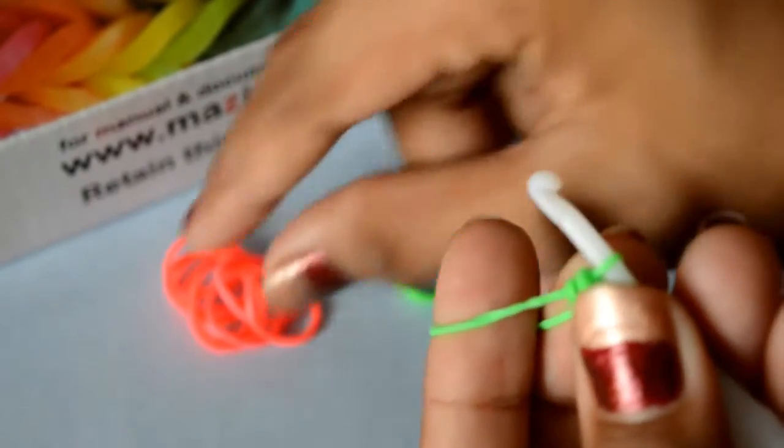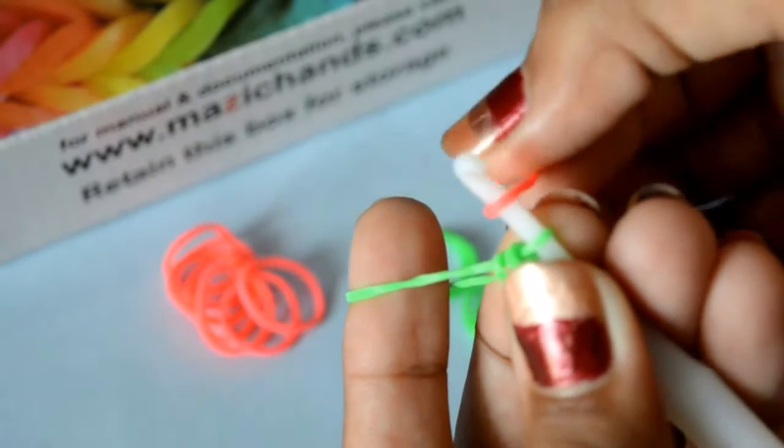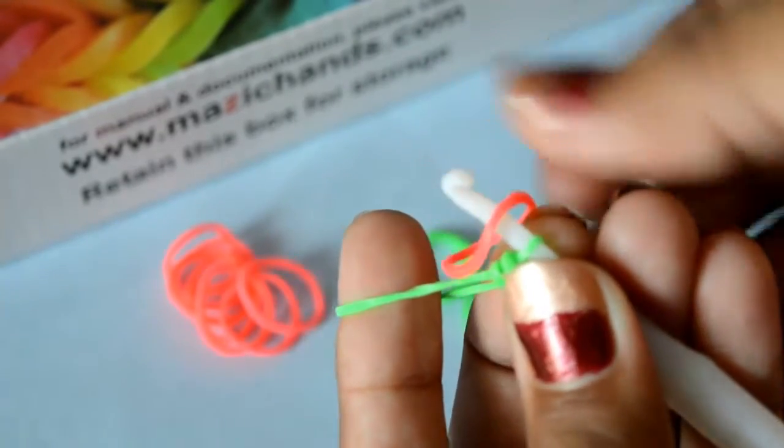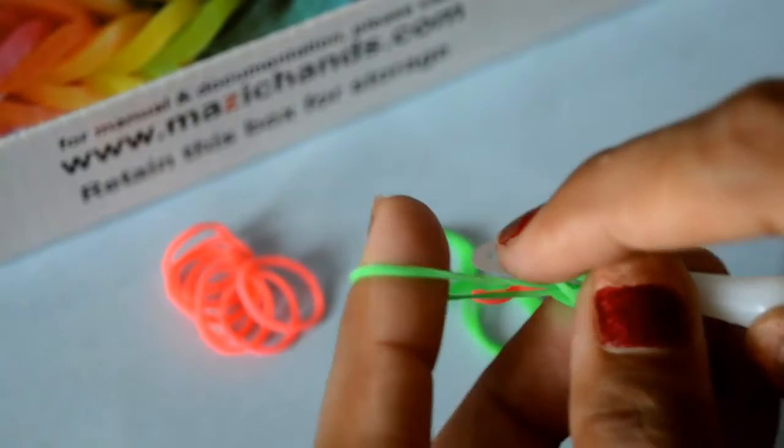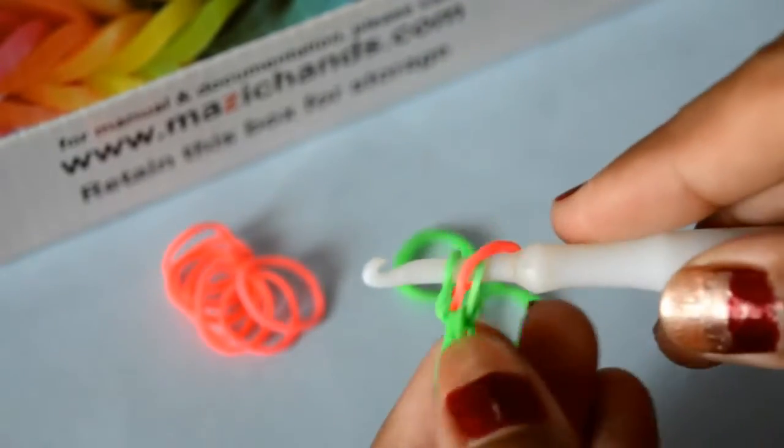Now here, take the single rubber band of other color and then to this green double band. It should look like this.